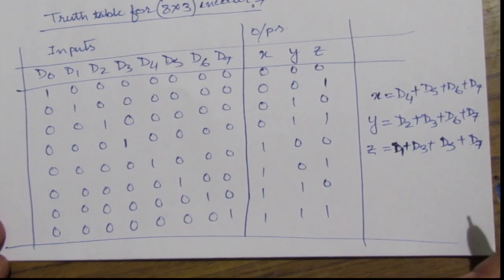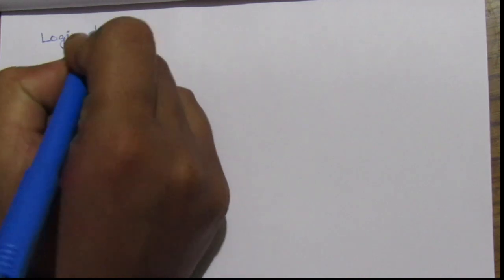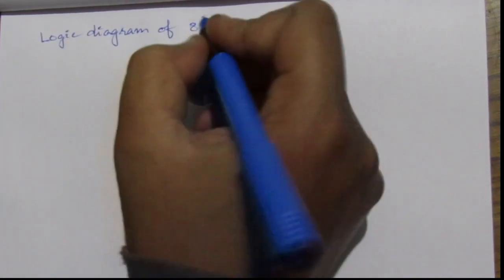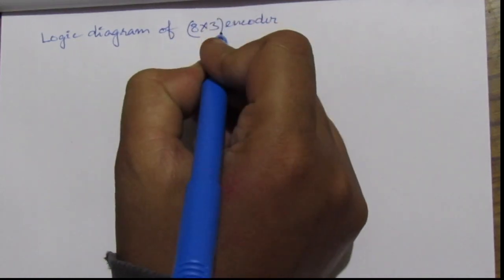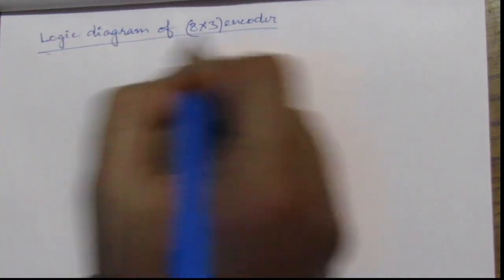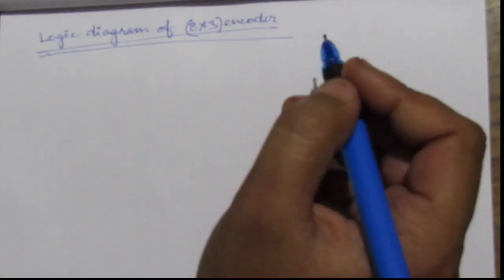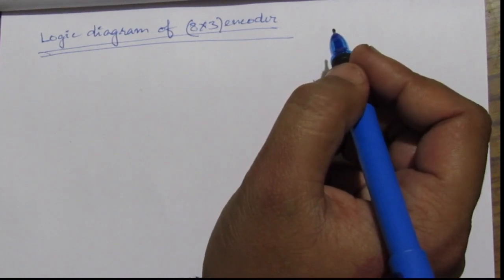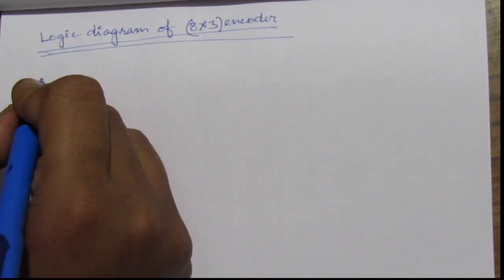So now we will try to make the logic diagram of it. Logic diagram of 8 into 3 encoder or we can say octal to binary encoder. Here we have 8 input lines. Starting from d0 to d7 we have 8 input lines and we have 3 outputs x, y and z. So we will have 8 input lines.